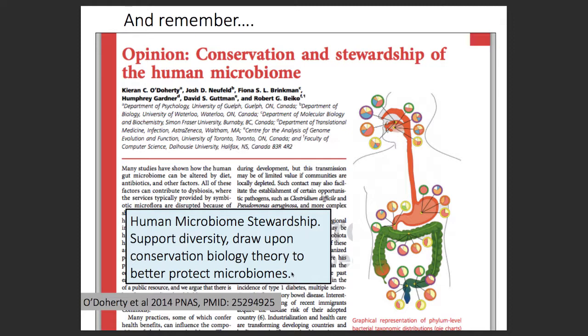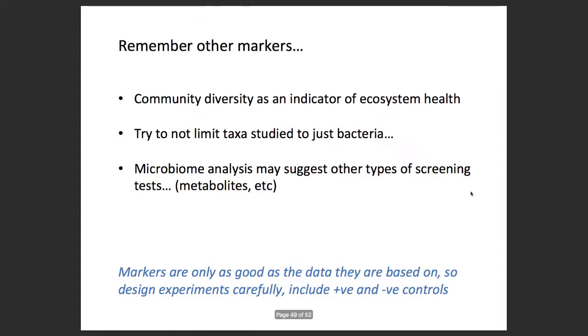One thing to appreciate is the idea of looking at different kinds of taxa. There's also an important concept led by Rob Beiko: we should be supporting diversity. A lot of conservation biology theories have been developed for macroscopic organisms, but we really need to draw upon conservation biology for microbiomes — thinking about how to protect microbiomes and have stewardship of microbial diversity, not just for human microbiomes but for other microbiomes on Earth as well.